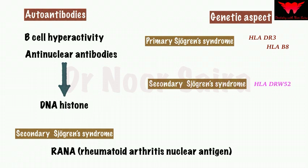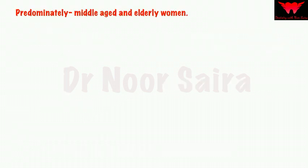Another important correlation with Sjögren's syndrome is the genetic aspect. There is an association with the HLA system. In primary Sjögren's syndrome, it is HLA-DR3 and HLA-B8, whereas in secondary Sjögren's syndrome it is HLA-DRW52. This has been asked in MDS dental entrance examinations and can be a tiebreaker in competitive exams. Epidemiologically, Sjögren's syndrome is most commonly seen in middle-aged and elderly women, with a female-to-male ratio of 10:1.